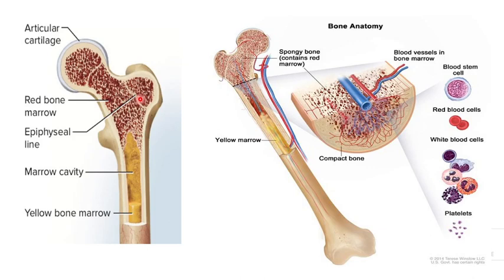We can say that the activity of bone marrow decreases with age. Even so, red bone marrow still persists in localized regions in adults — in the rib region, clavicle, scapulae, pelvis, vertebrae, sternum, proximal end of the femur (thigh bone), and also the humerus (arm bone).